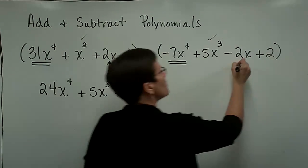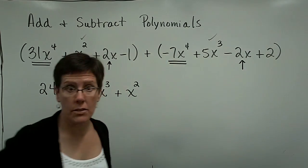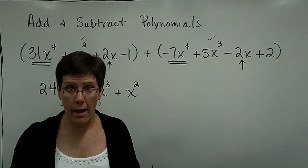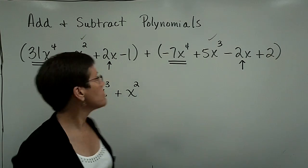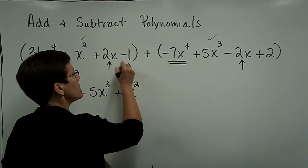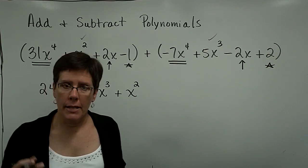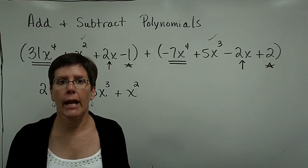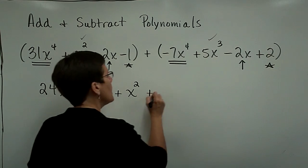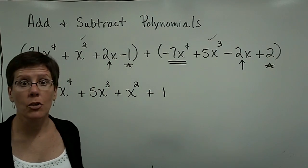The 2x here and the minus 2x here are like terms, but they add to be 0x. I don't even write that down. And then finally, this minus 1 and this plus 2 are like terms. A negative 1 and a positive 2 adds together to be a positive 1. And I have added these two polynomials. I'm all done.